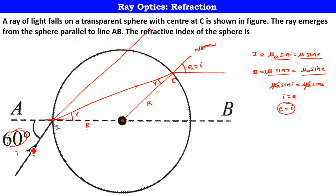If you see properly, this mu sine r and this mu sine r are actually same. So I can equate mu air sine i is equal to mu air sine e. So I can say that i is equal to e. That means the angle of emergence is also equal to angle of incidence here. Now, what is the angle of deviation? The incident ray is supposed to go straight like this. Because of this transparent sphere, it is finally going like this. This is the final ray. The difference between these angles is called angle of deviation.